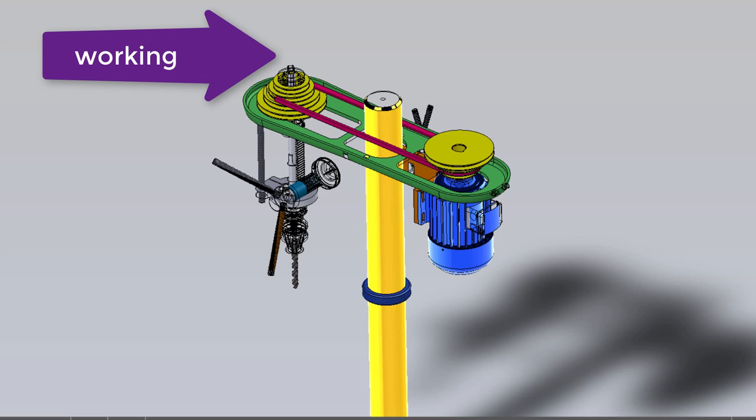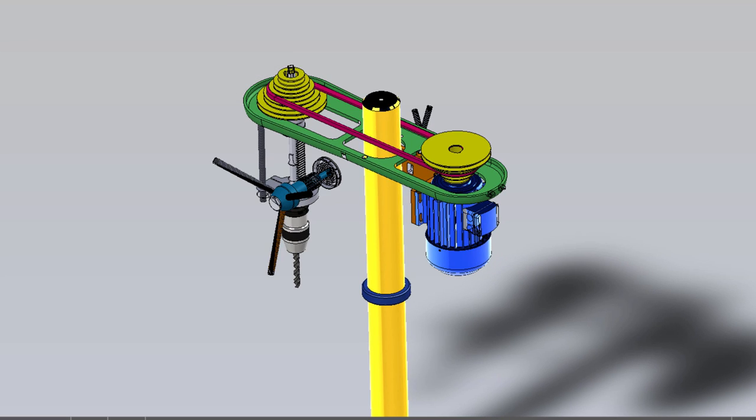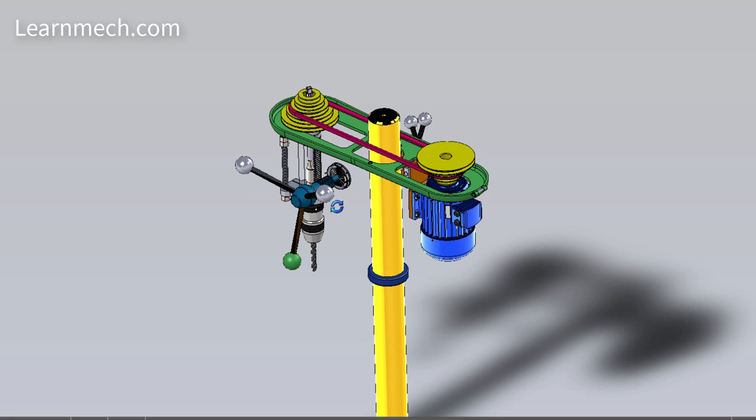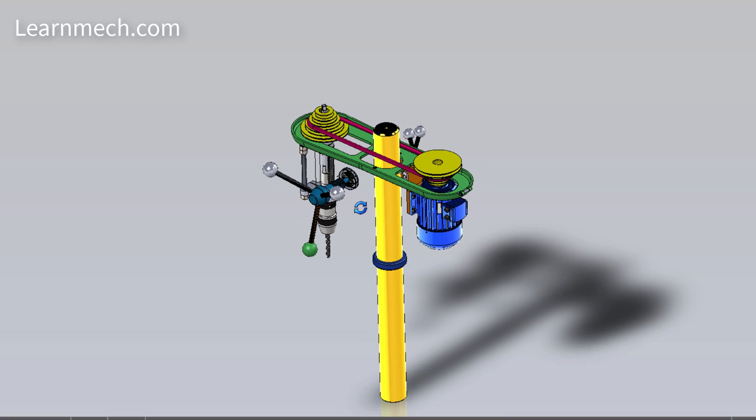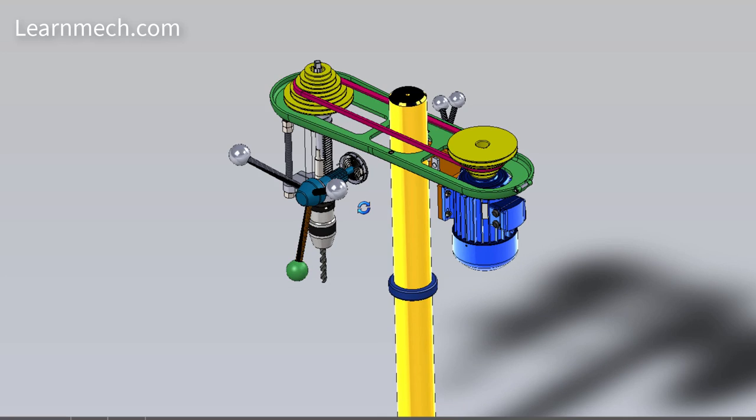Let's see the working of the drilling machine. I have already mentioned that when we rotate the handle it will rotate the drill bit along its axis of rotation, that is upward and downward.